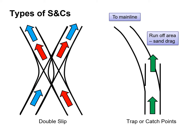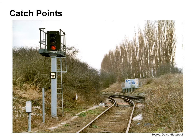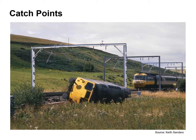Trap or catch points are often used to protect a main line. For example, if we have a runaway loco or a runaway wagon, rather than rolling onto the main line, it will approach a runoff area or what's known as a sand drag. Here you can see a real example of catch points — just in front of the signal the catch points are set, which would cause a runaway vehicle to travel into the sand drag and protect any vehicles on the main line. This image shows a locomotive that rolled away from its position and hit the sand drag, unfortunately rolling over on its side, requiring complex lifting arrangements.